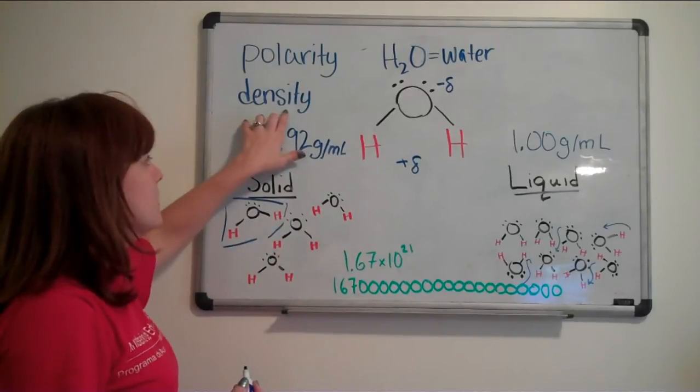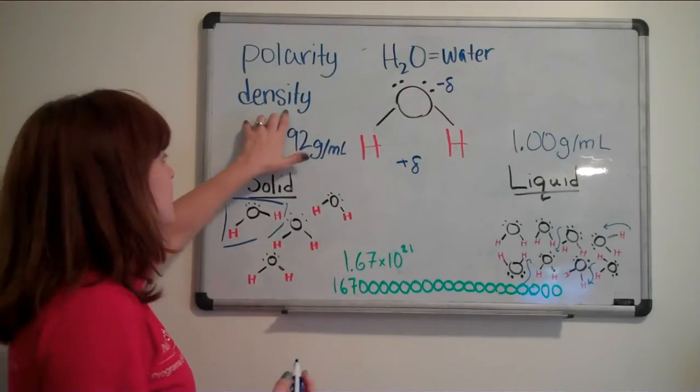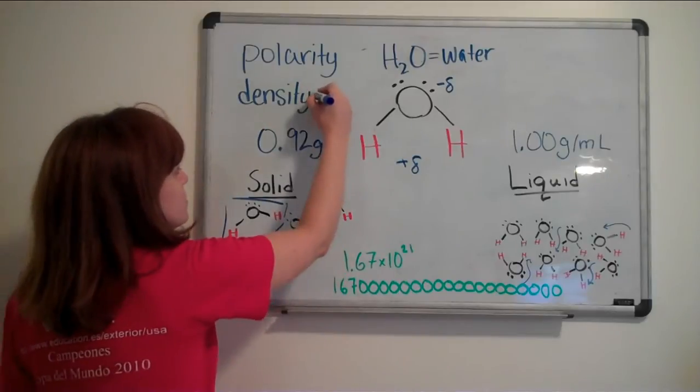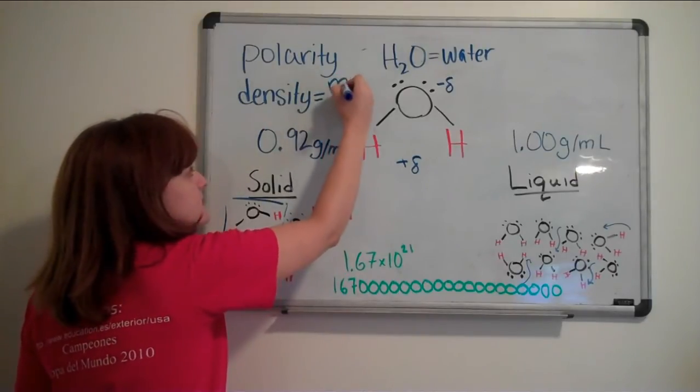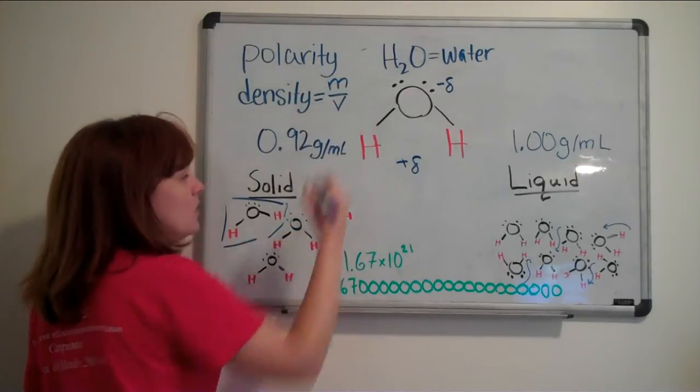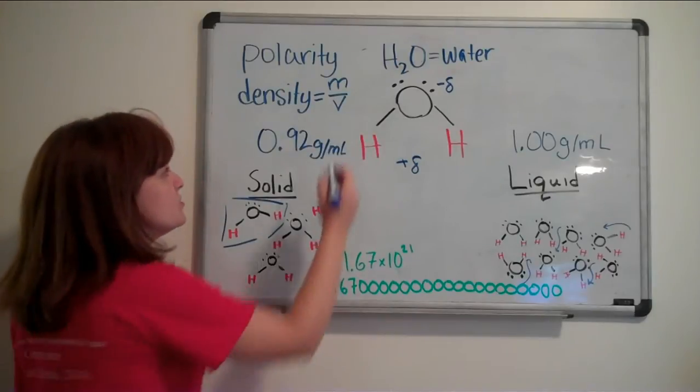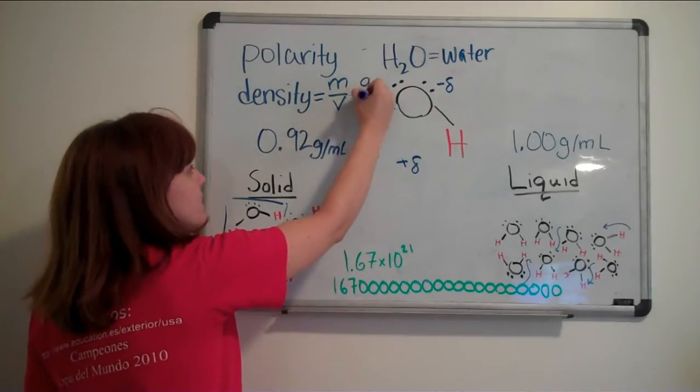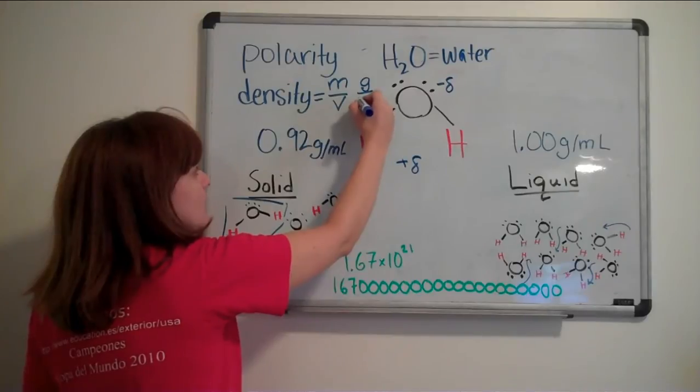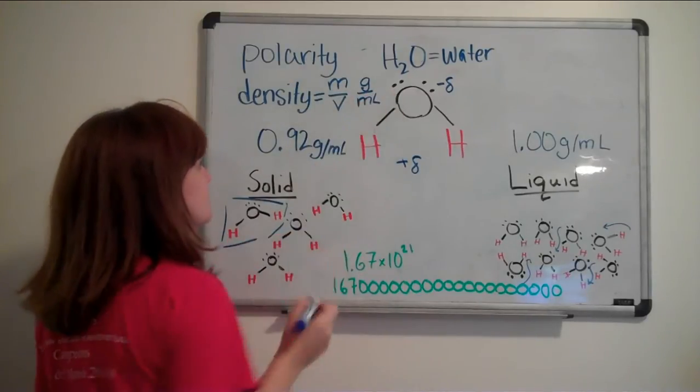And the density formula, again, is density is equal to mass divided by volume, which is usually, the mass is usually going to be given in grams, and the volume is going to be given in milliliters.